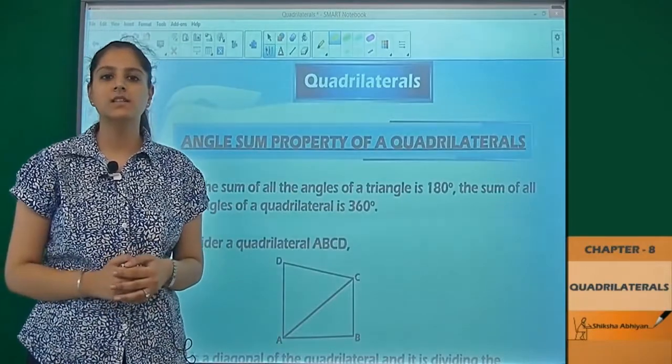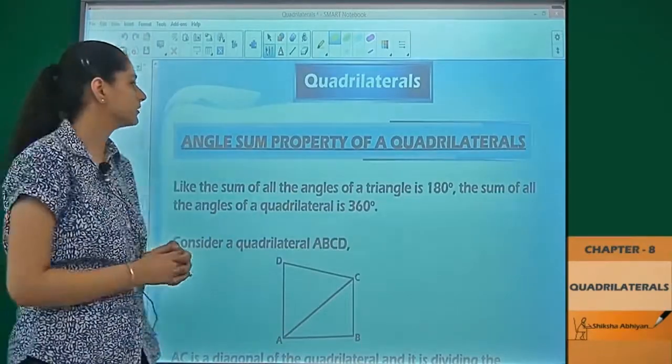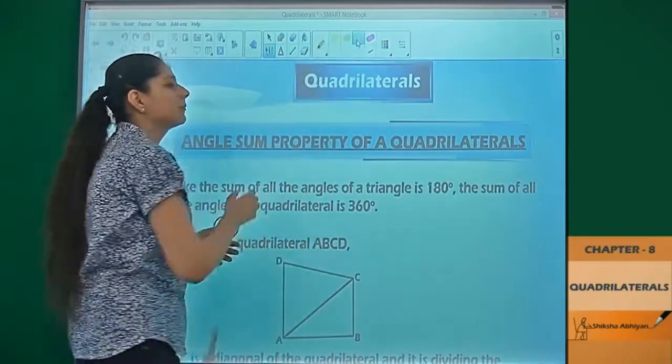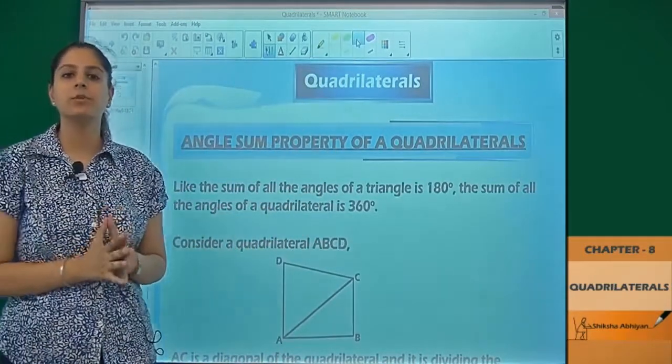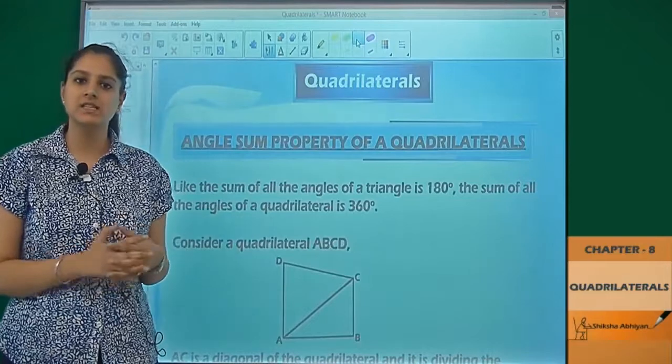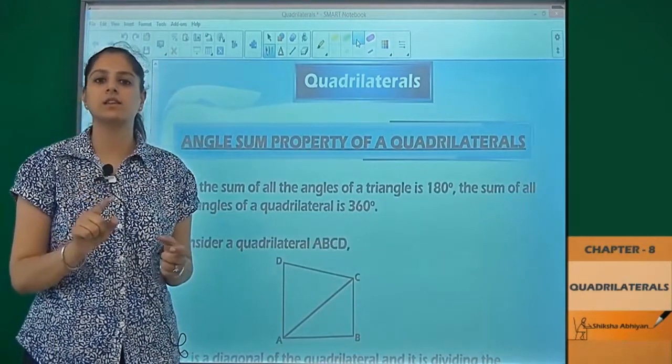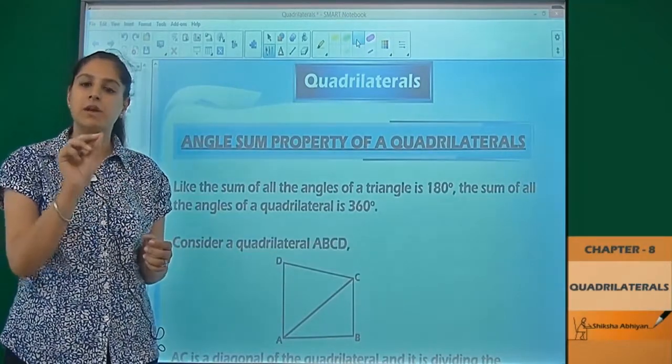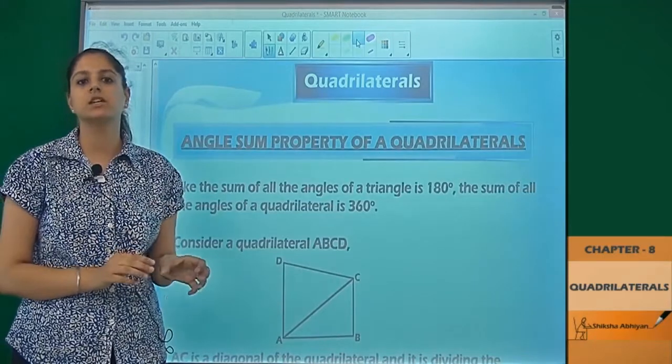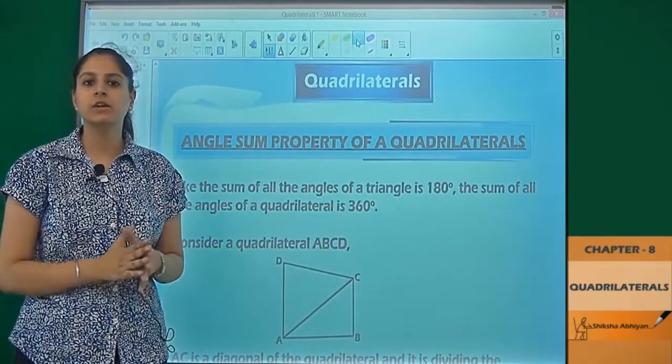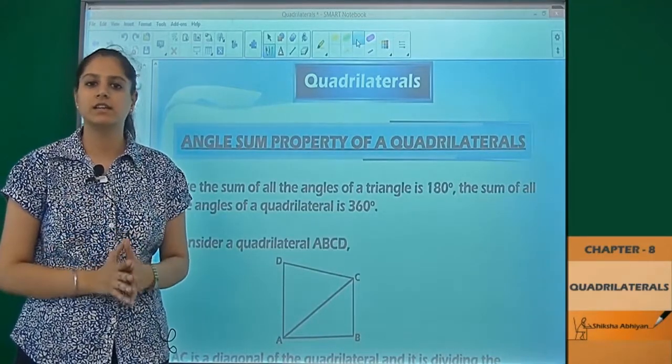Now our next topic is angle sum property of a quadrilateral. You have studied in your junior classes angle sum property of a triangle. That means if you have three angles in one triangle, and if you have to add them, then the sum will be 180 degrees.